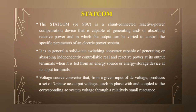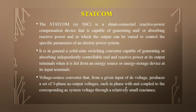From the diagram you can understand this point. The voltage source converter, from a given input of DC voltage, produces a set of three-phase AC output voltages, each in phase with and coupled to the corresponding AC system voltage through a relatively small reactor.